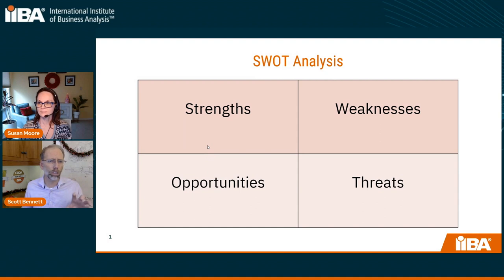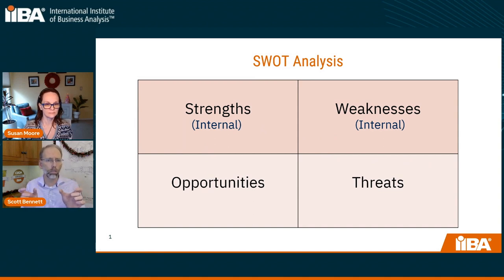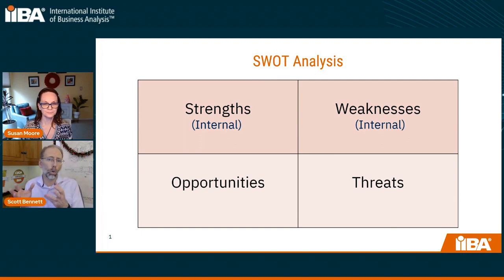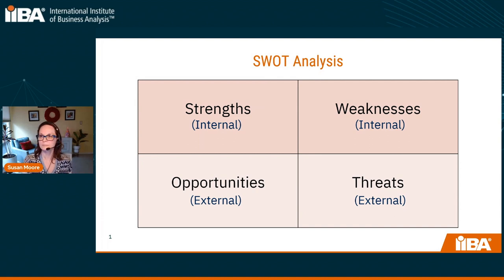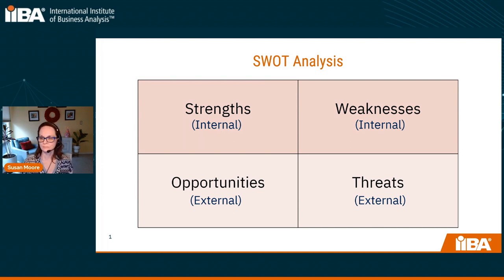As you're looking at this, they might seem like random words on the screen. Strengths and weaknesses are internal to an organization or the subject that you're doing the SWOT analysis on. For example, in an organization you might have a weakness of marketing or a weakness of lack of funding. That's the internal perspective. The second layer below that are the external factors — things beyond the control of the organization that might influence it.